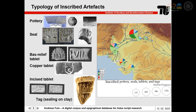The typology of inscribed artifacts distinguishes between pottery, seals of different shapes, bas-relief tablets copied from a mold, copper tablets, incised tablets of different shapes, and sealings on clay labeled as tags. The spatial distribution of these artifacts can be seen on the map, where each pie chart represents the ratio of artifact types at each site. We can see that the spatial distribution of inscribed artifacts is not homogeneous, which is an important factor when analyzing Indus inscriptions.